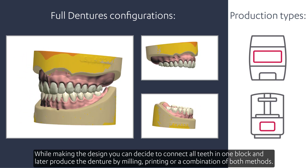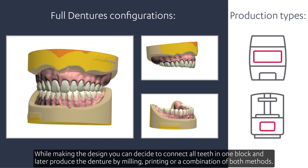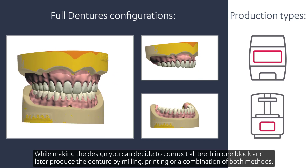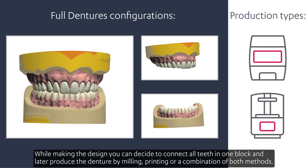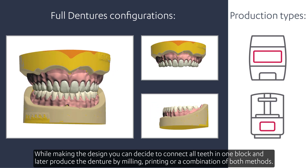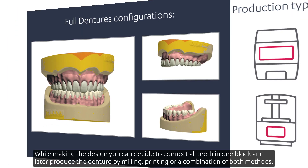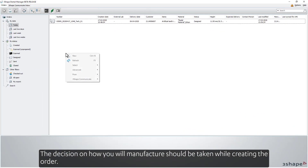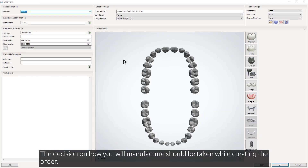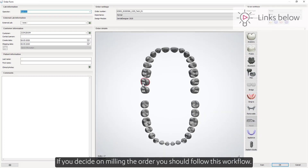While making the design, you can decide to connect all teeth in one block, and later produce the denture by milling, printing, or a combination of both methods. The decision on how you'll manufacture should be taken while creating the order. If you decide on milling the order, you should follow this workflow.